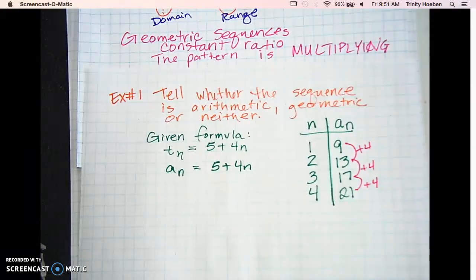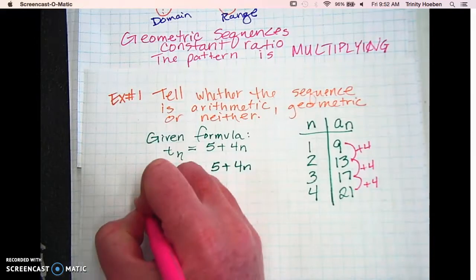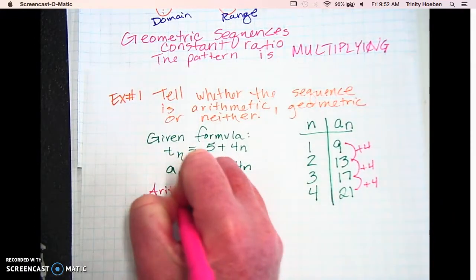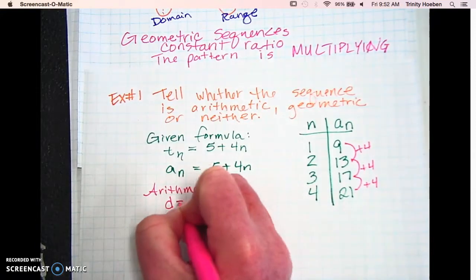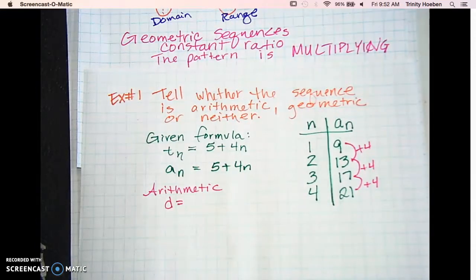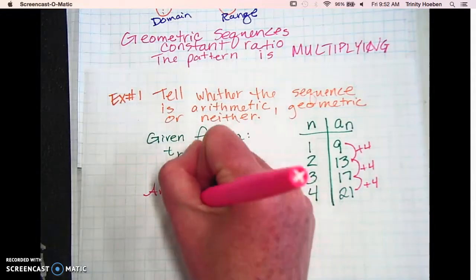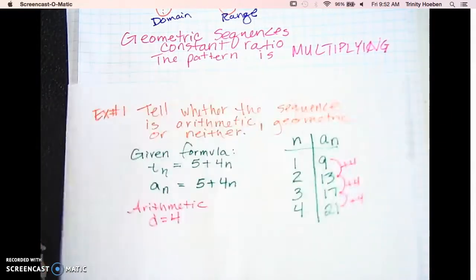I mean, we could try some more numbers, but that's going to keep happening. So is this one arithmetic? Is it geometric or neither? Arithmetic, right? So this one's arithmetic. And if they ask you to find the d, what's the d? 4. 4 is what we're changing by.